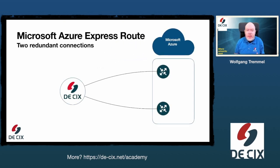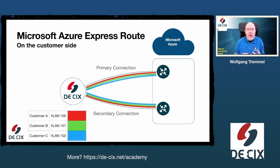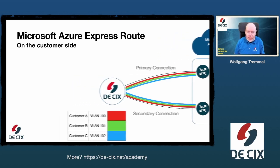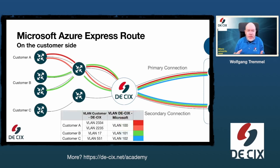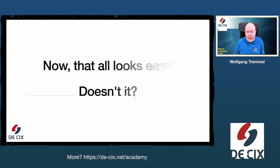Microsoft Azure is connected to the DE-CIX infrastructure with two connections: a primary connection and a secondary connection. On both of them, each customer VLAN is configured. Since Microsoft wants to use their own VLAN IDs, we also translate the VLAN IDs in our infrastructure. So customers have on their side a different VLAN ID than what we see at Microsoft. The VLAN ID on the customer side can be selected freely by either the customer or by their ISP. This looks fairly easy, but now we come to the speciality of Azure.